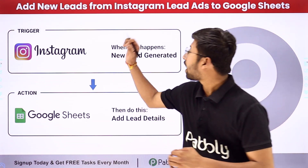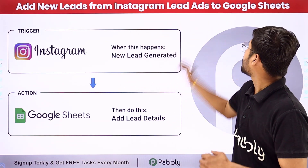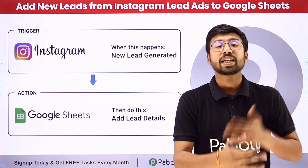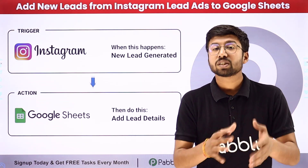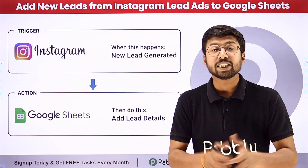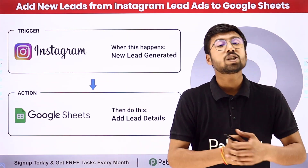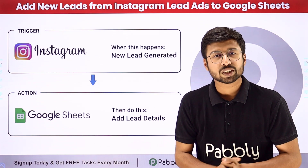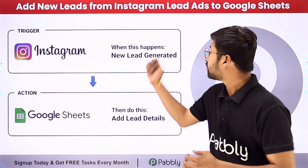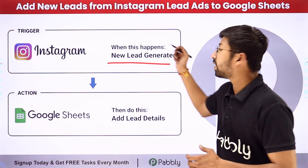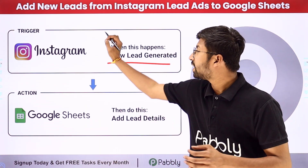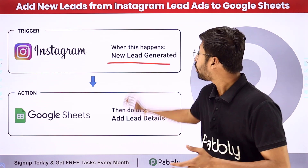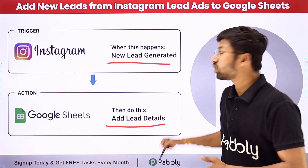In this video, we are going to learn how to add new leads from Instagram lead ads to Google Sheets. Let's say to market your business, you are running Instagram lead ads and generating some new leads. And to record those leads, you want to add the leads in your Google Spreadsheet as well. Now you can completely automate this process — whenever a new lead is generated in Instagram lead ads, automatically, with the same details, we are going to add this lead in our Google Spreadsheet as well.